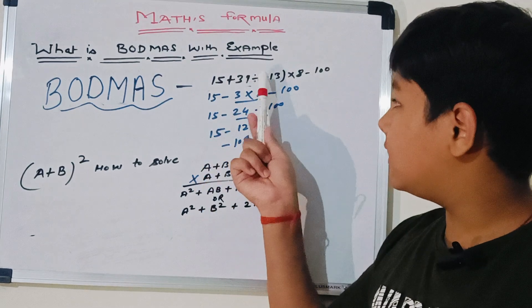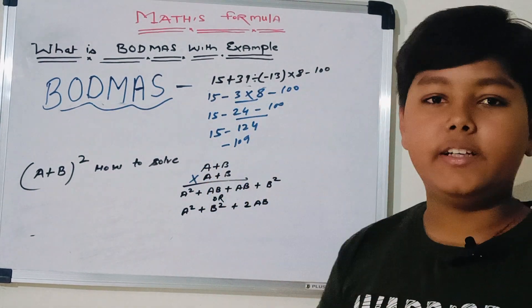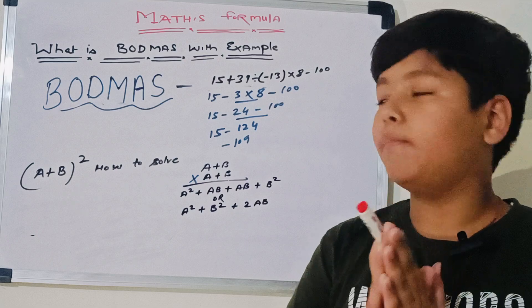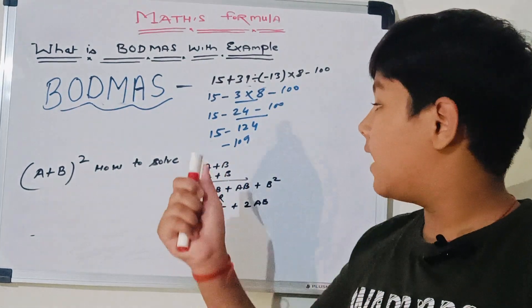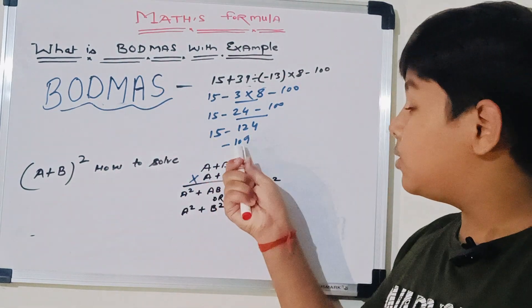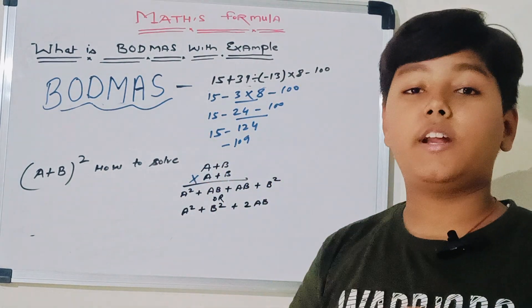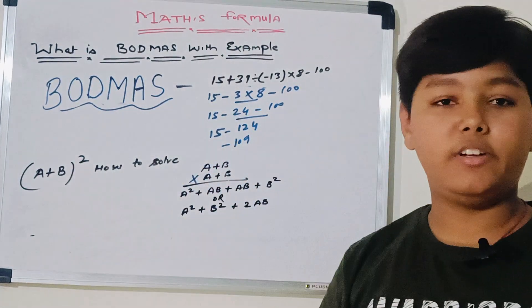This is minus and this is minus. Then there are two negative integers, so we will plus them both. It will be minus 124. Then, as we know, positive will be subtracted by the negative integers. So the answer will be minus 109, as the negative integer is bigger than the positive integer.